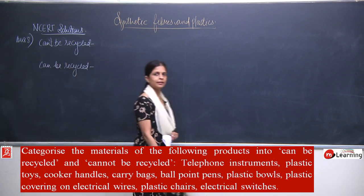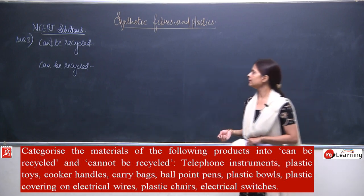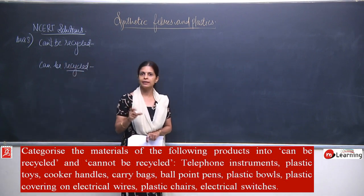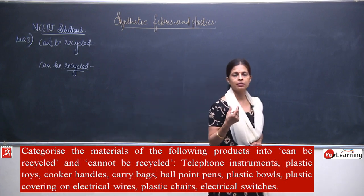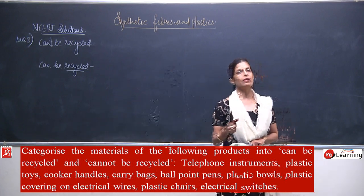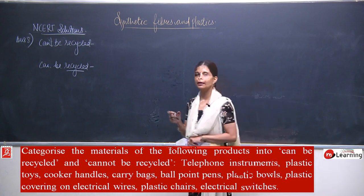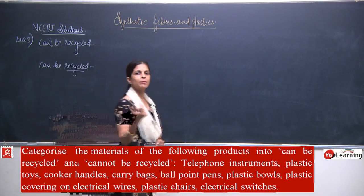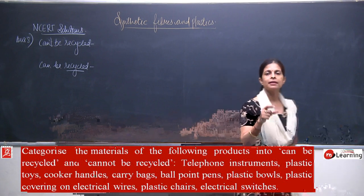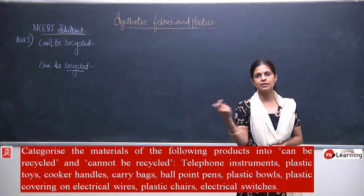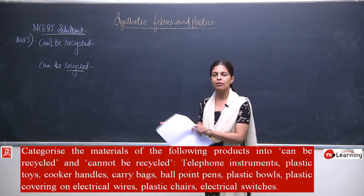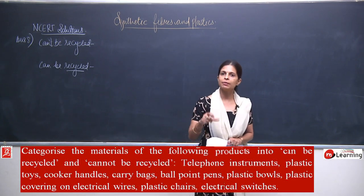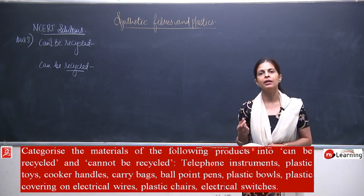Before writing the answer, let's understand what recycling means. For example, take a plastic item that is no longer in use. Rag pickers collect such waste plastics, which are gathered at one place, collected by different people in different areas, then melted and reused to make different things.